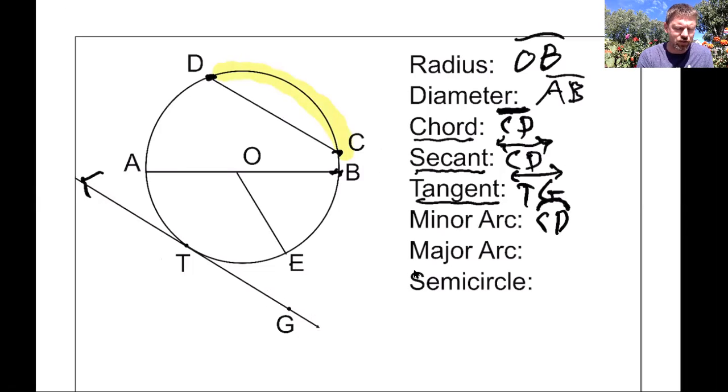Now you'll notice I could make another arc. I could make this arc starting at D and going all the way around to C. That would be clearly not a minor arc. That'd be a major arc. It's much more than half of a circle.